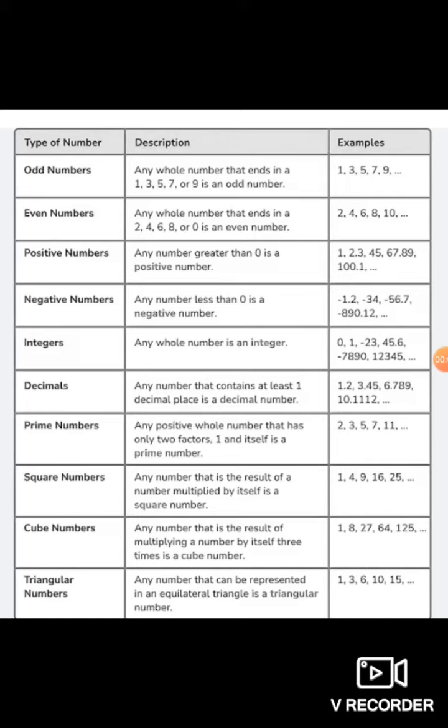Any whole number which ends in a 1, 3, 5, 7 or 9 is an odd number. For example, 1, 3, 5, 7, 9, 19, 29, 25.